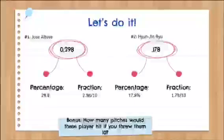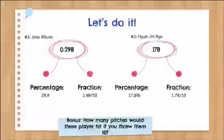So let's see how we do it. For Jose Altuve, we have 0.298. And for percentage, remember, we have to move our decimal point two spots to the right, and we get 29.8%. And for a fraction, just remember that percentage is always out of 100. So if we have 29.8 out of 100, then we can simplify that to 2.98 out of 10 by dividing both numbers by 10.